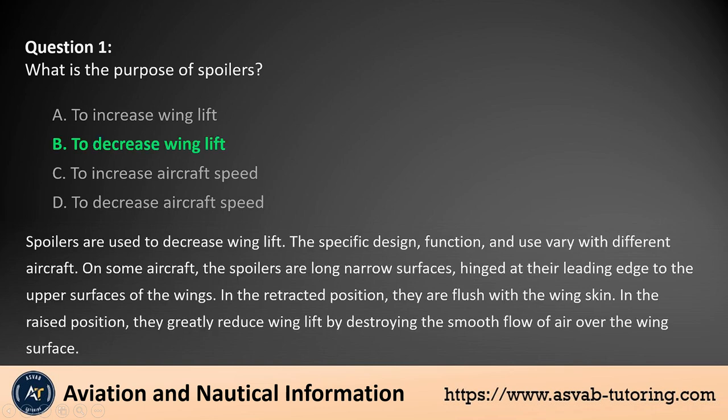The answer is B. Spoilers are used to decrease wing lift. The specific design, function, and use vary with different aircraft. On some aircraft, the spoilers are long narrow surfaces, hinged at their leading edge to the upper surfaces of the wings. In the retracted position, they are flush with the wing skin. In the raised position, they greatly reduce wing lift by destroying the smooth flow of air over the wing surface.